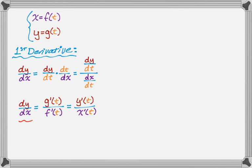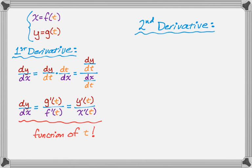The key thing about the first derivative is that it's actually going to be a function of t. And that's a big deal, because when we go to find the second derivative, we've got to deal with that t somehow.